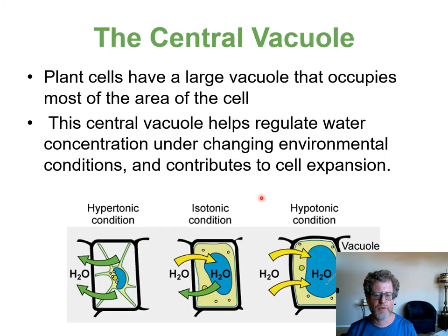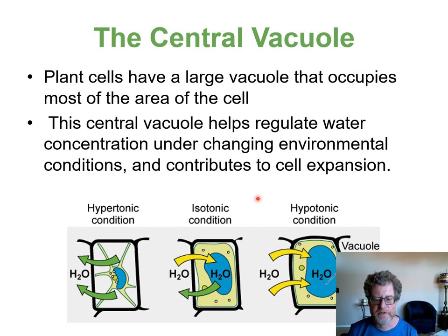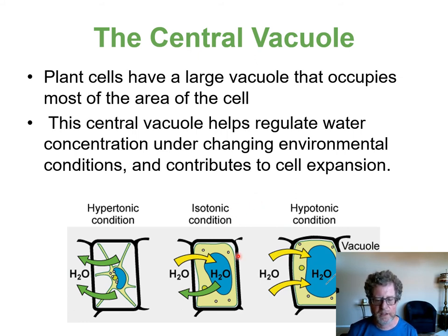The central vacuole within a plant helps with water balance. Animal cells want a balance between water inside and outside the cell, whereas plants want increasing amounts of water pulled into the cell so the cell membrane expands and is pressed against the rigid cell wall. Plants actually want a more dilute solution outside the cell.